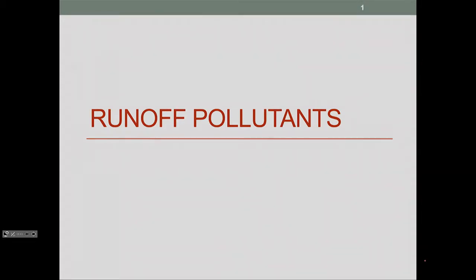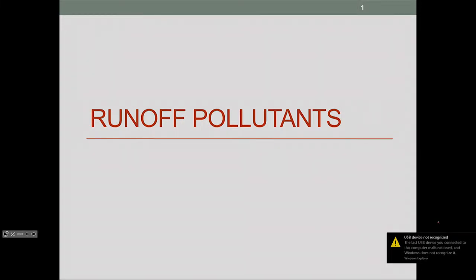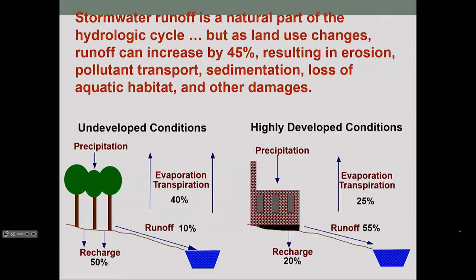One of our concerns in environmental science and environmental engineering is dealing with runoff pollutants. What is a runoff pollutant? Basically, stormwater runoff is any water that moves over the surface of the land, and it's a natural part of the hydrologic cycle.